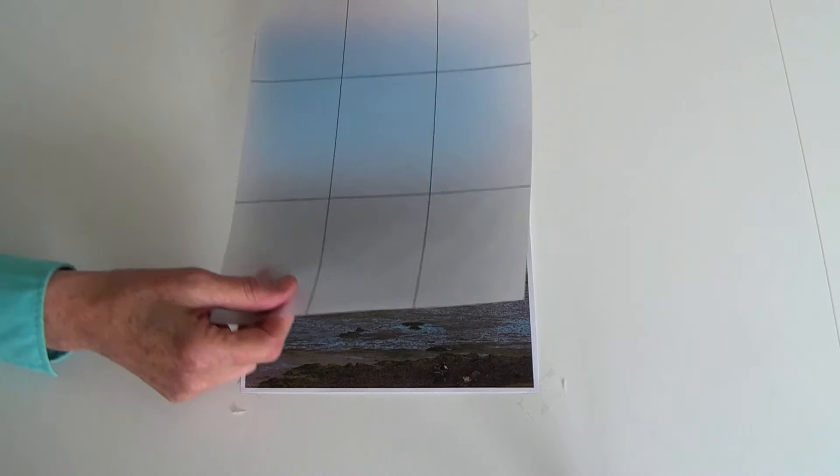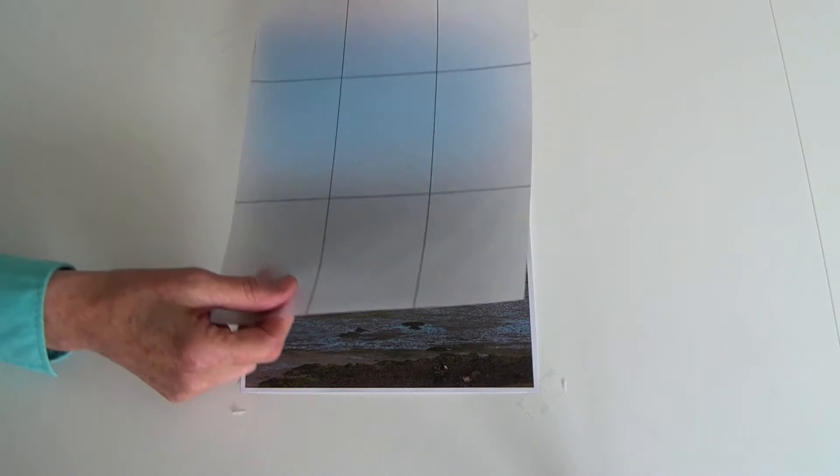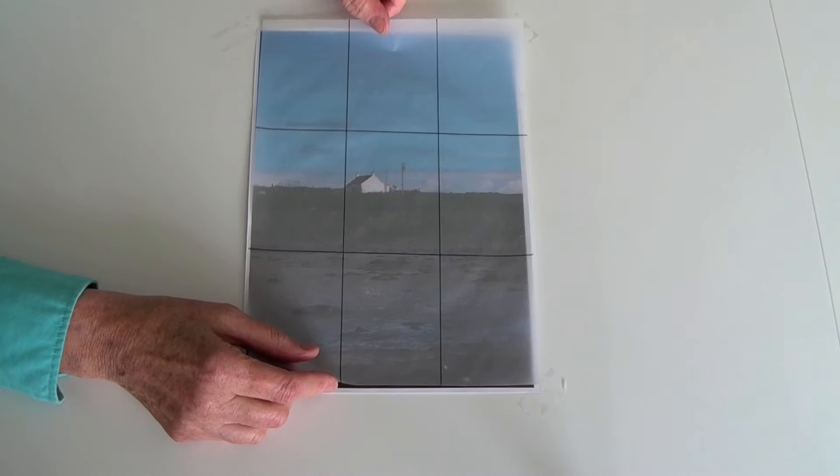Find yourself a piece of tracing paper and put four lines on this which will divide the piece equally into nine sections. So we now have our rule of thirds on a piece of tracing paper.